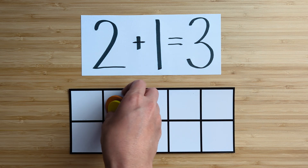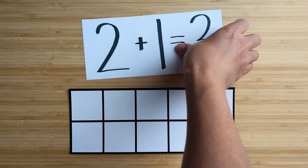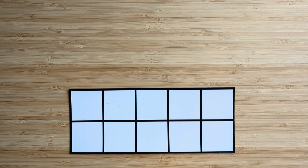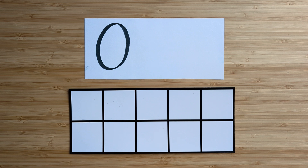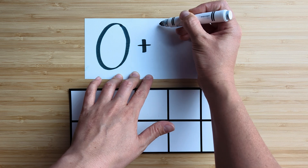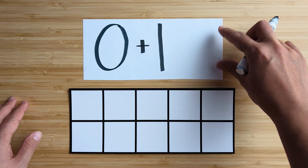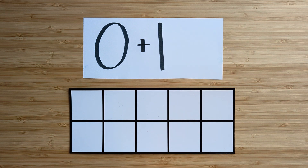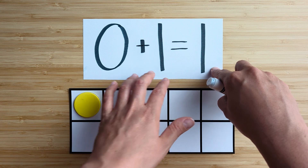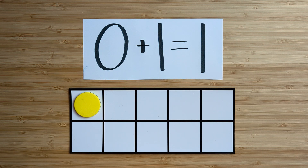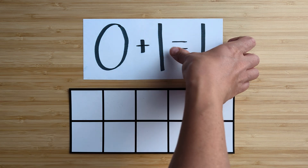Clear off your boards. Let's try the next one. Make the number zero. Nice job. What's one more than zero? Let's count: one. One more than zero is one.